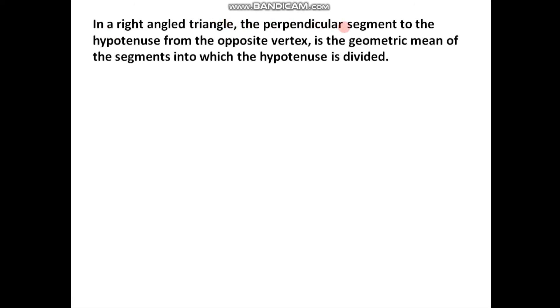The statement of the theorem is: in a right angle triangle, the perpendicular segment to the hypotenuse from the opposite vertex is the geometric mean of the segments into which the hypotenuse is divided.